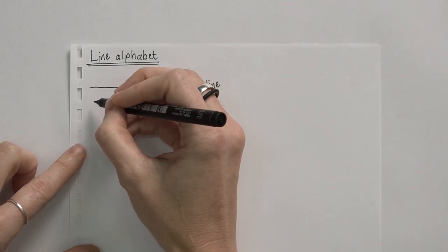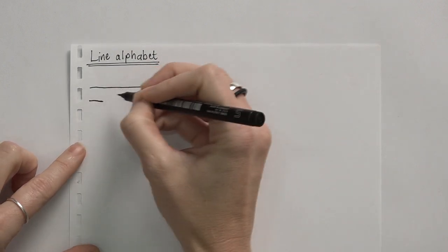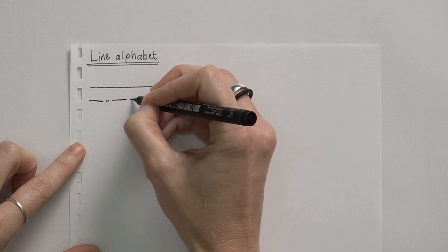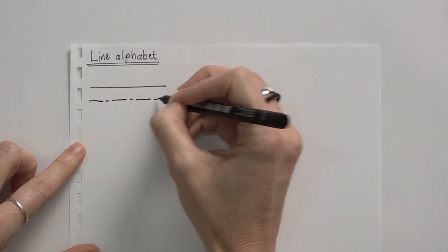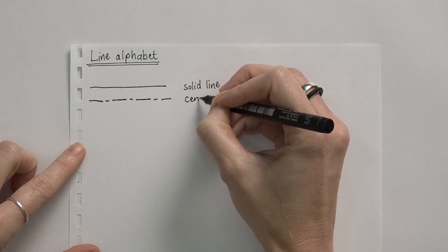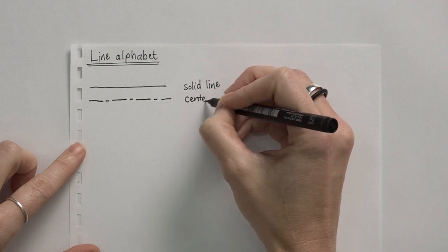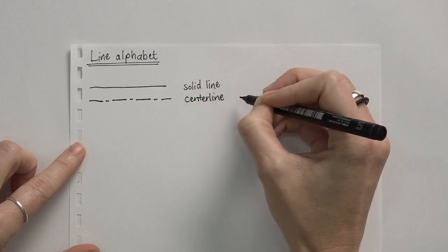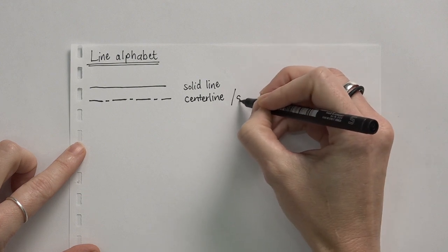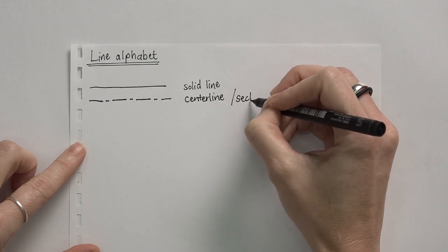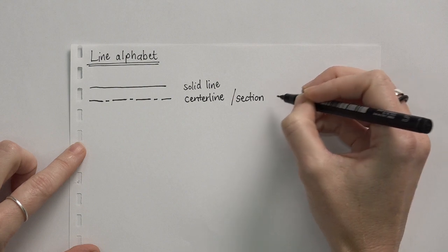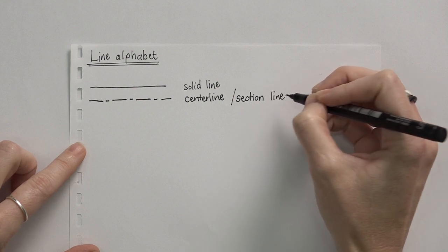The second line is a center line. A center line has long and short dashes — long, short, long, short — and this is called a center line. A center line can also be used for section lines. When we indicate a section, we also use a line that looks like a center line.